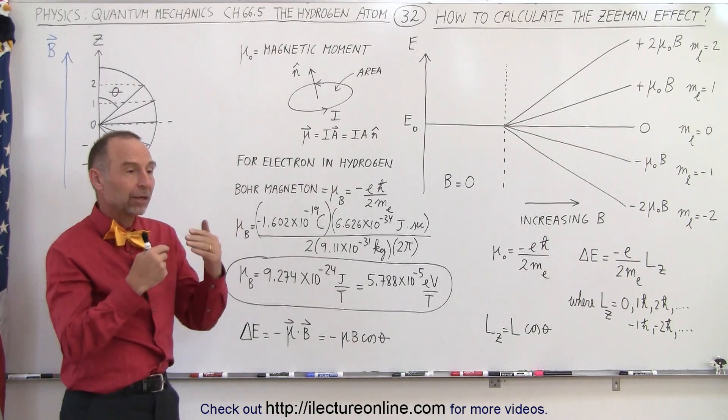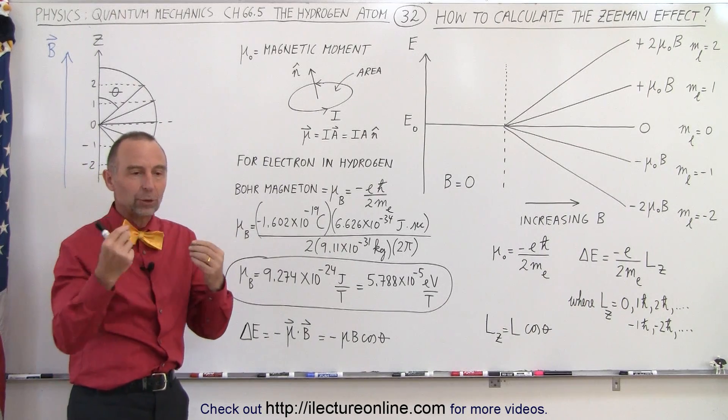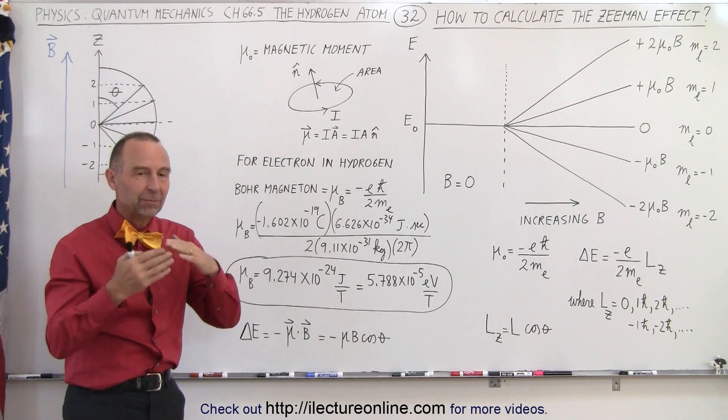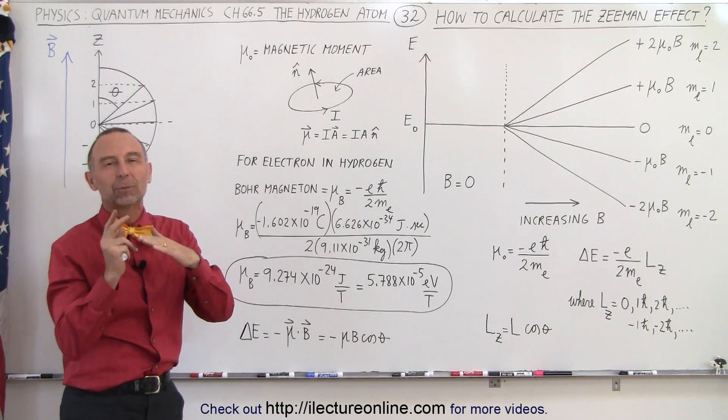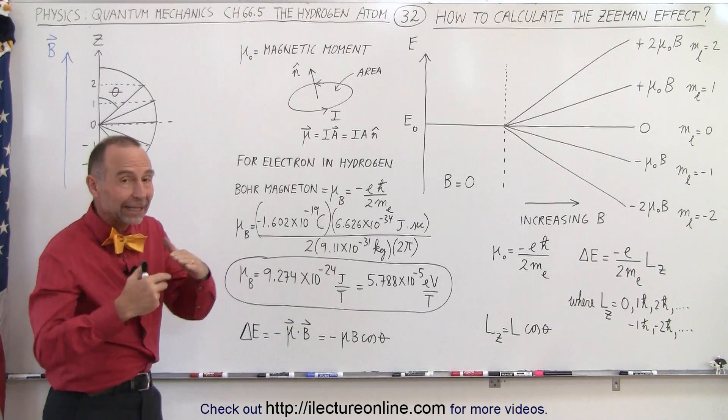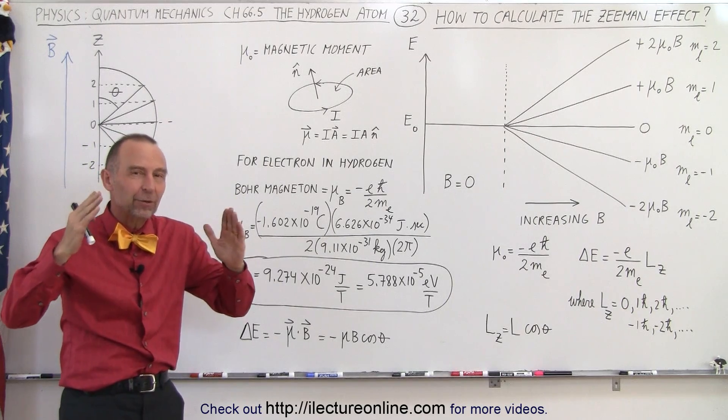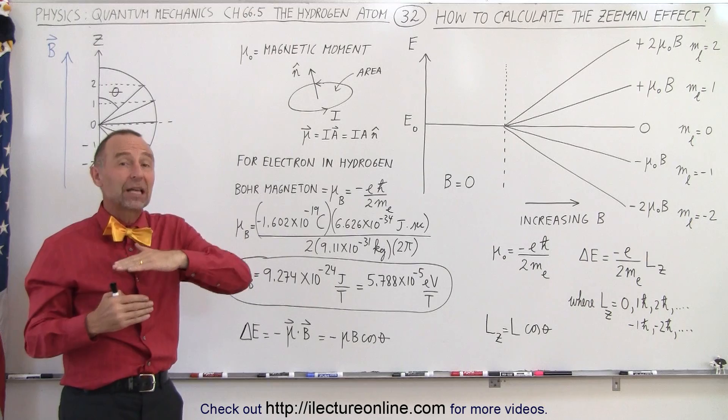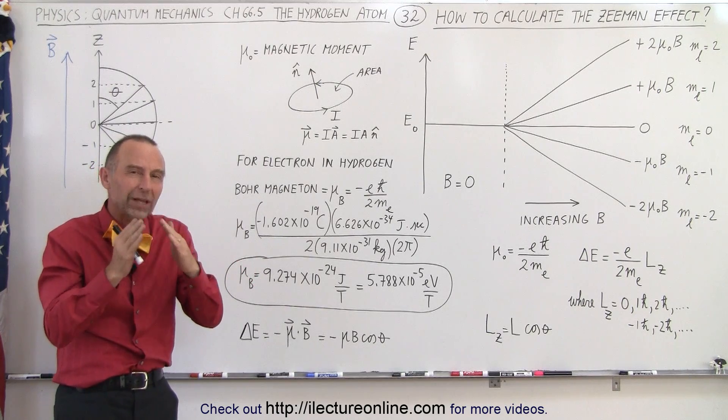This means that an electron, which is normally in orbit around the nucleus and has a particular angular momentum orientation, once you put a magnetic field around it, you can see that the orientation can change, and that the change has to be in quantized, particular locations or orientations.